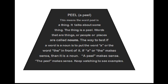A peel. This means the word peel is a thing — it talks about something. The thing is a peel. Words that are things or people or places are called nouns. The way to test if a word is a noun is to put the word 'a' or the word 'the' in front of it. If 'a' or 'the' makes sense, then it is a noun. A peel makes sense. The peel makes sense. Keep watching to see examples.